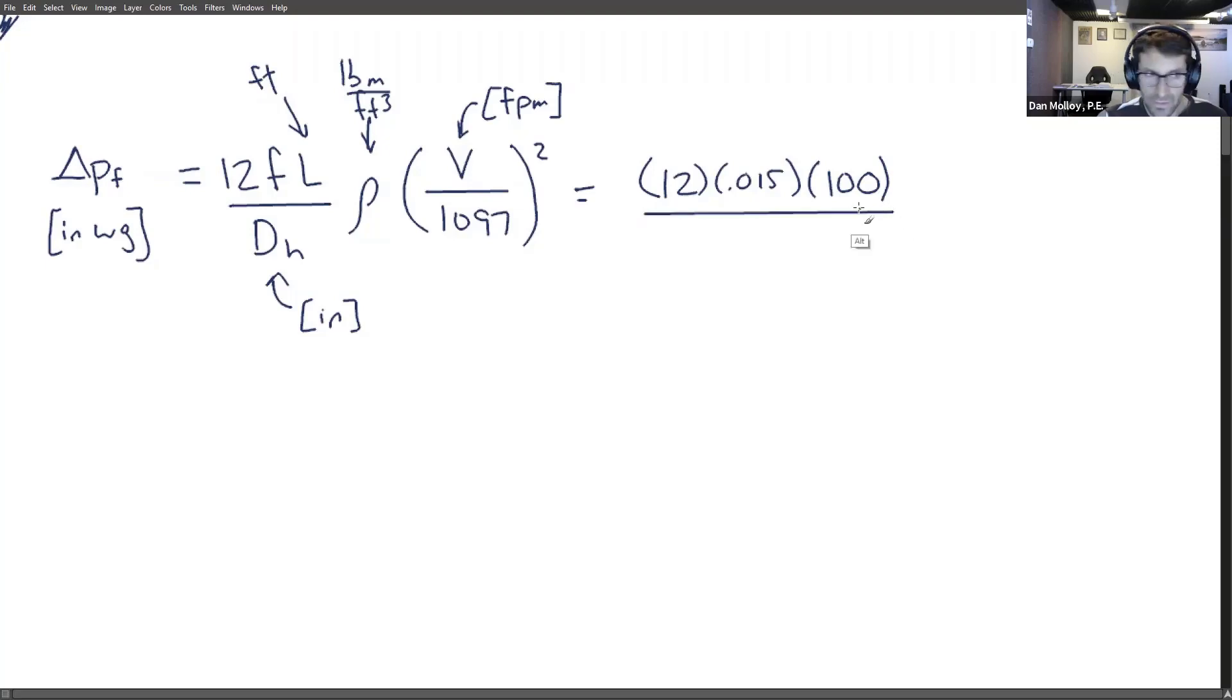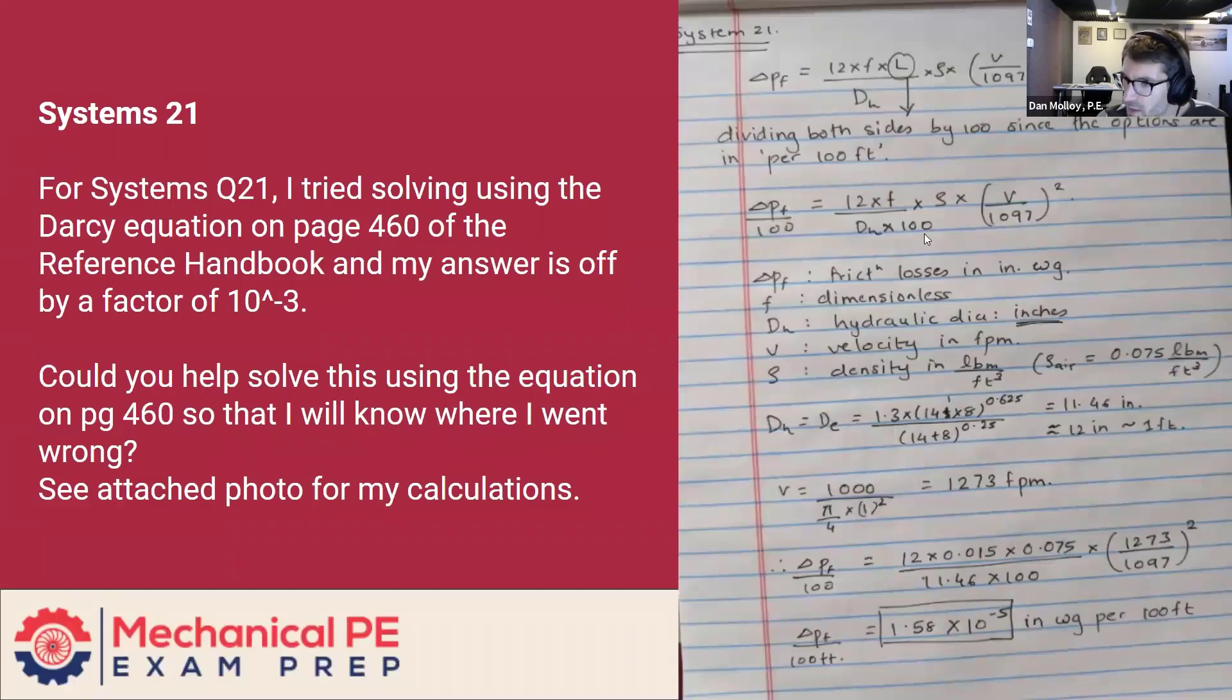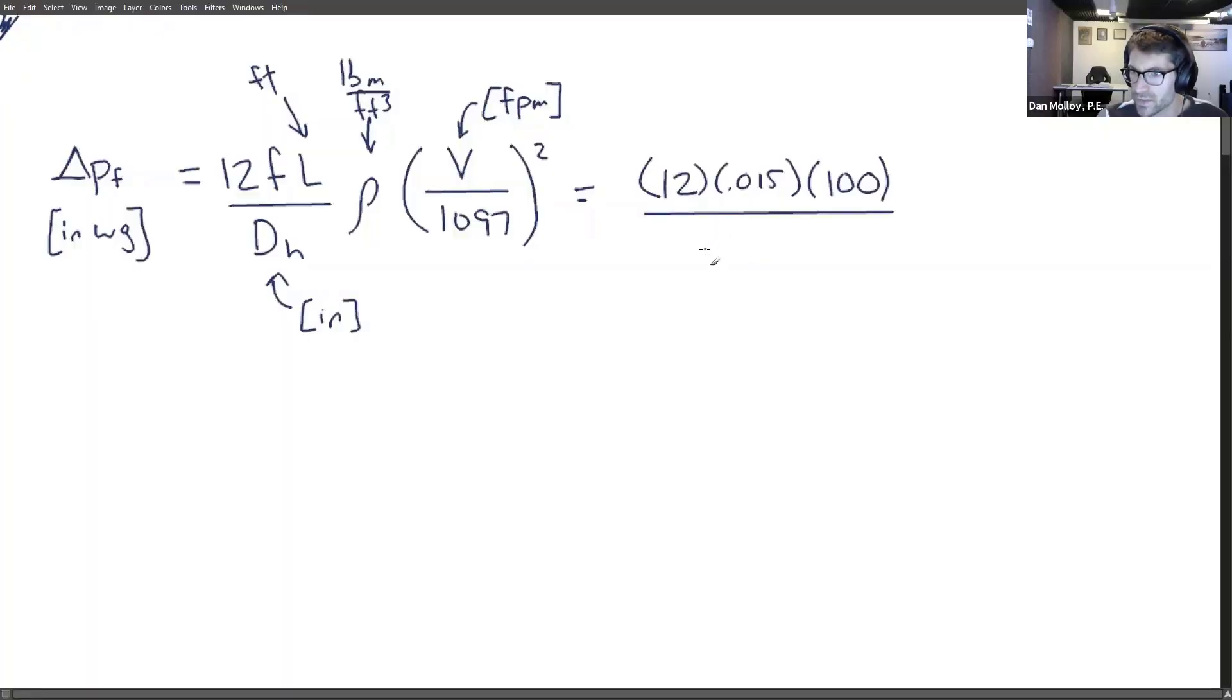And then there was another division by 100 shown here that I don't know that that is founded. I don't know what the grounds for that is. So I think when we get rid of those two, that's going to change it by about 10 to the fourth. Well, let's see.